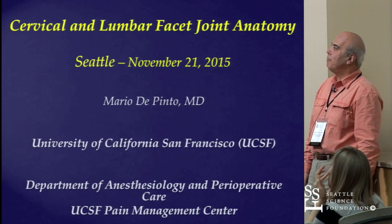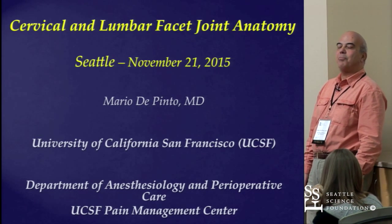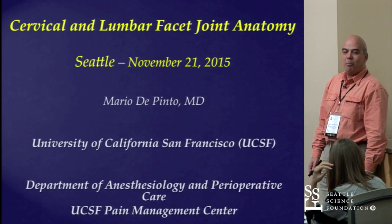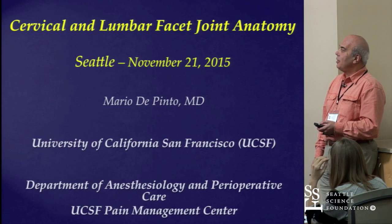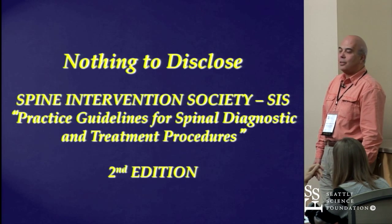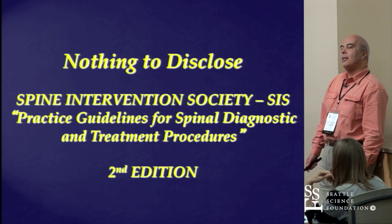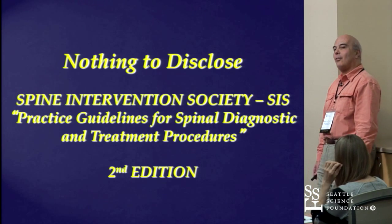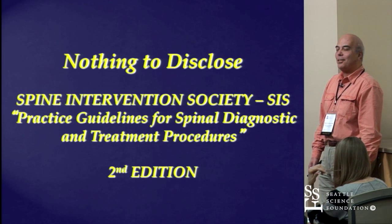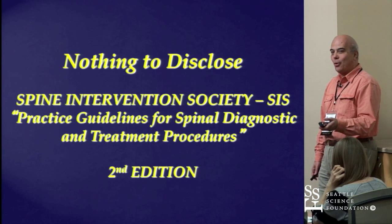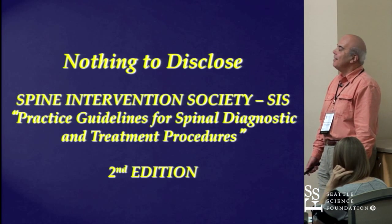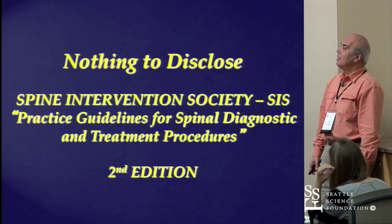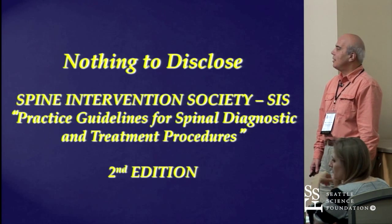We are going to switch gear here. The first topic doesn't present much controversy — it's an anatomy topic, and I don't think there is anything anybody can debate. I'm going to talk about cervical and lumbar facet joint anatomy first. I have nothing to disclose except that I'm a member of the newly renamed Spine Intervention Society — previously called ISIS. I became a member a year ago, bought the book, and many of the slides and pictures in the next two presentations are taken from that.